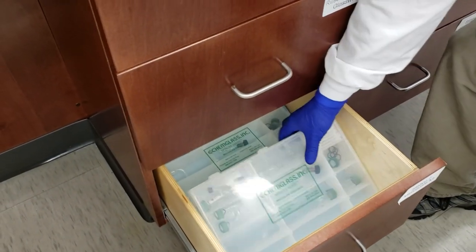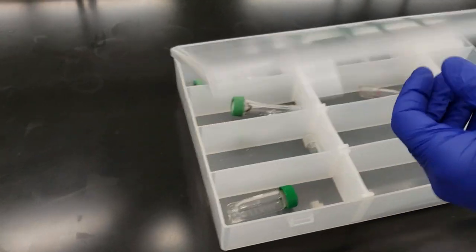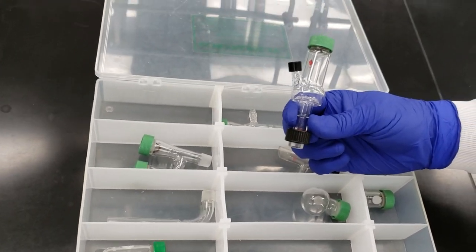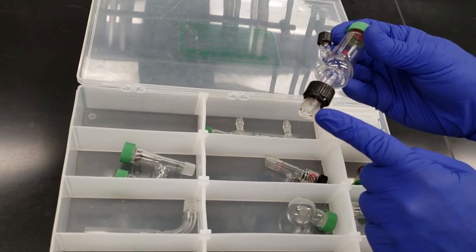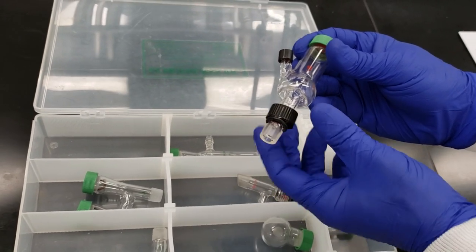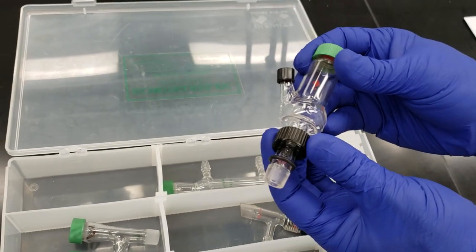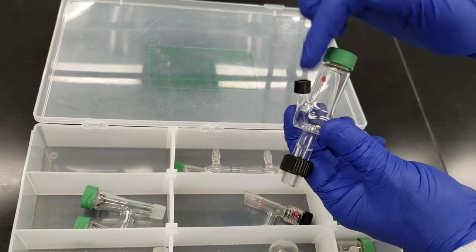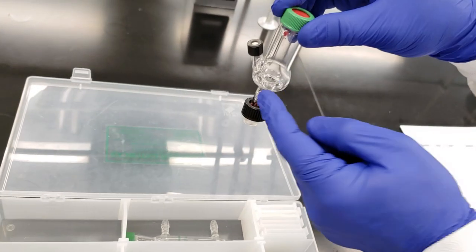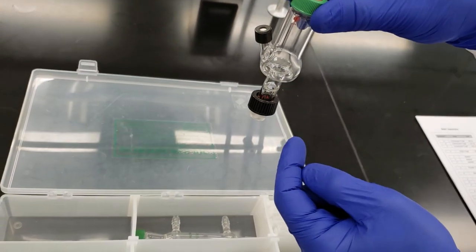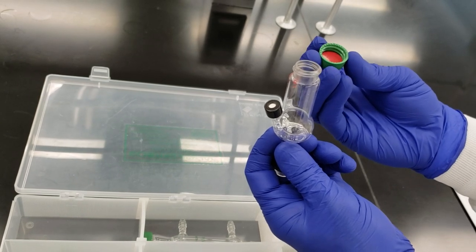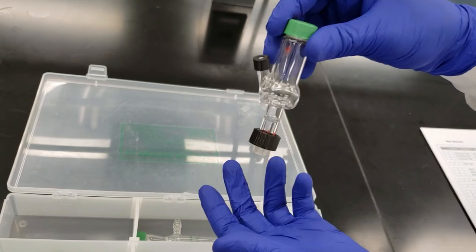Let's look at drawer three, our microscale kits. There are two kits per station. We have our Hickman still head with ground glass joints and O-rings, with screw caps to attach to conical vials and round bottom flasks. It has a side arm so as vapors come up and condense, we can collect using a needle or pipette. We can attach a thermometer adapter to the top or seal the system with the screw cap.